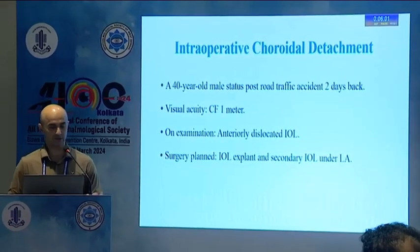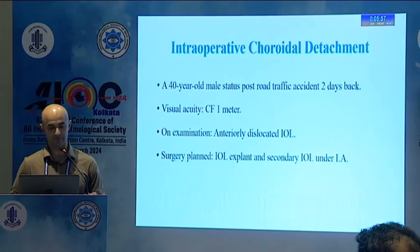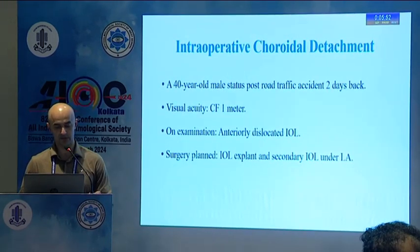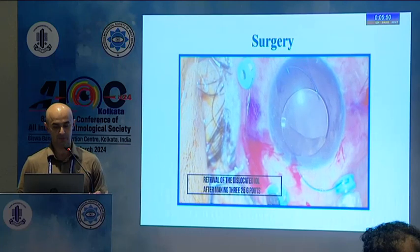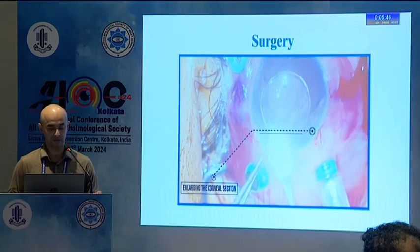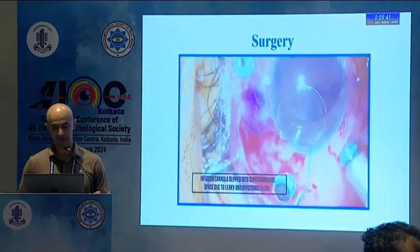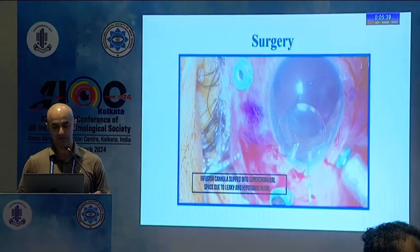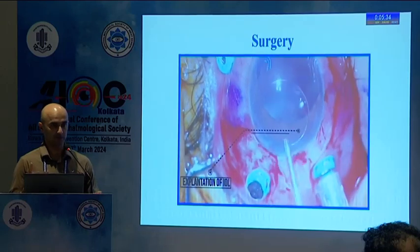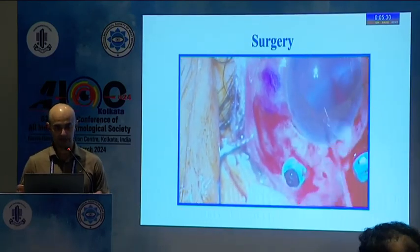Regarding intraoperative choroidal detachment — here is a 40-year-old male, status post road traffic accident, who came with one meter vision. On examination, there was anteriorly displaced IOL and surgery was planned for IOL explant and secondary IOL. The infusion cannulas are in place and I'm enlarging the limbal incision to explant the lens. You can see the mound of choroid starting to build up because of the open wound — there is hypotony and the cannula has slipped back.